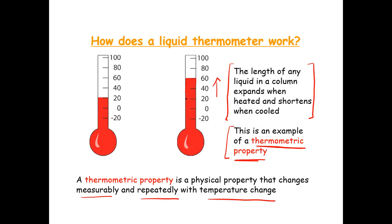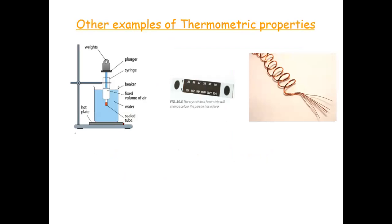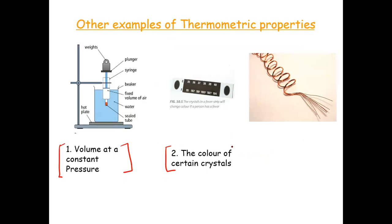A thermometric property is a physical property that changes measurably and repeatedly with temperature change. You need to know four examples: the first is volume — the liquid always expands by the same amount if you increase the temperature by 40 degrees. The second is the color of certain crystals — some crystals change color depending on temperature, for example going from red at 40 degrees Celsius to white at 50 degrees Celsius.